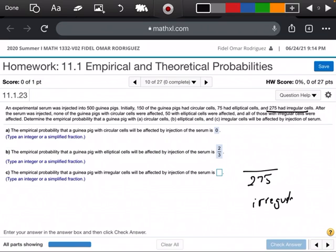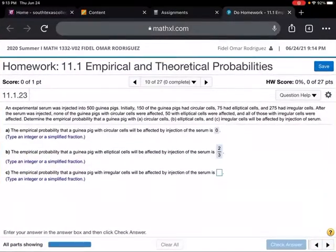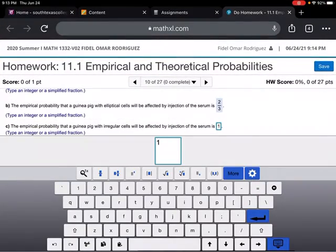Regular cells. And look what it says right here. And all of them with irregular cells were infected. So all 275. So 275 over 275 is just going to leave me with one. And so right here, I'm just going to enter in the number one. And we got our problem.